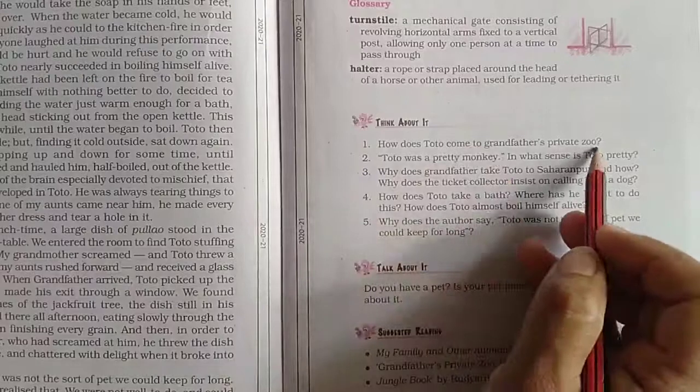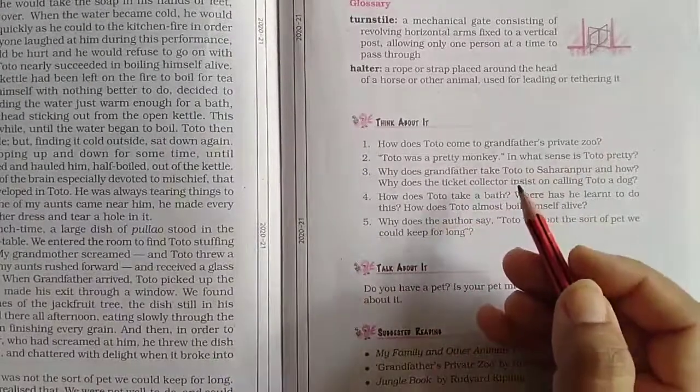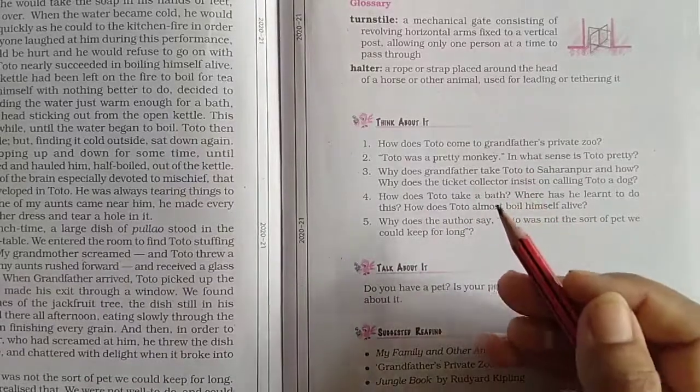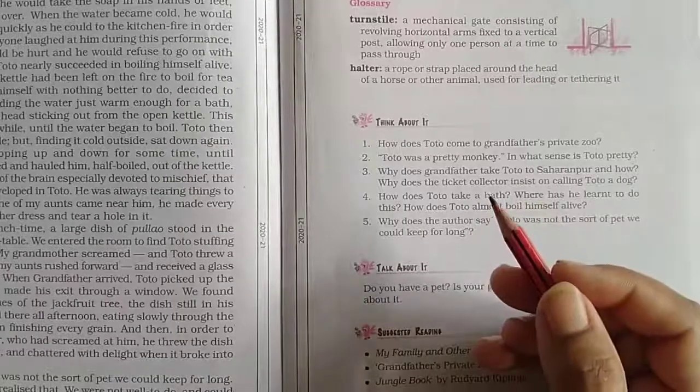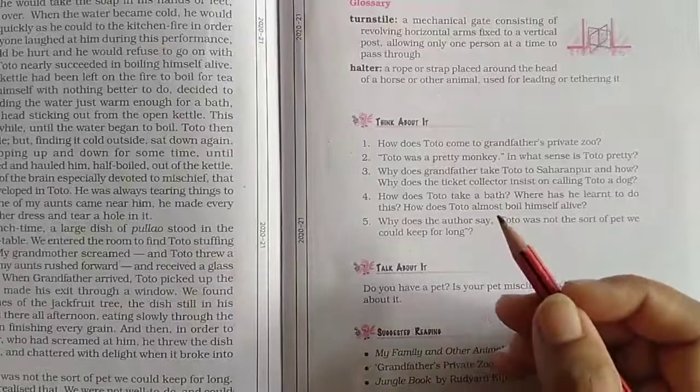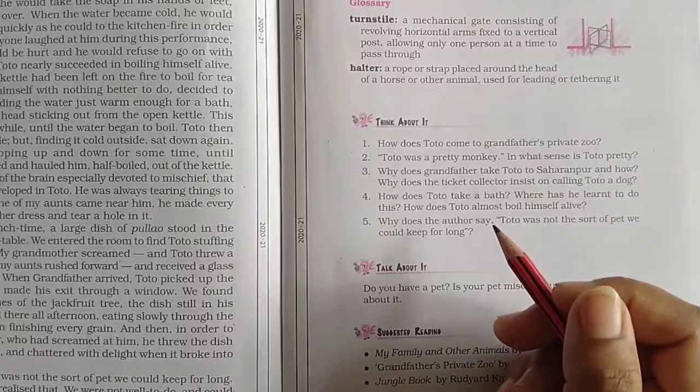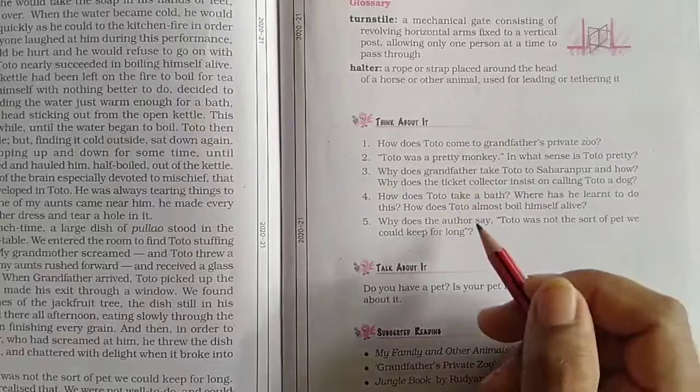How does Toto come to grandfather's private zoo? Grandfather was fond of pet animals and had a private zoo of his own. He had seen Toto, a pretty baby monkey, with a tanga driver who used to keep him tied to a feeding trough. The monkey looked so out of place there that grandfather decided to make him part of his private zoo.